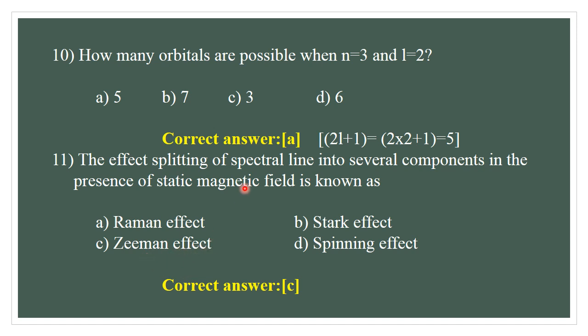The splitting of spectral lines into several components in the presence of a magnetic field. The correct answer for the question is C.